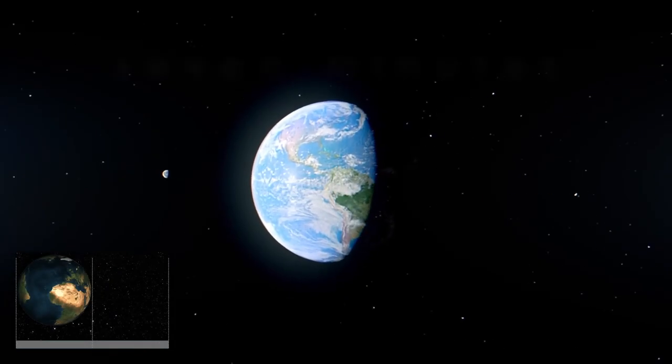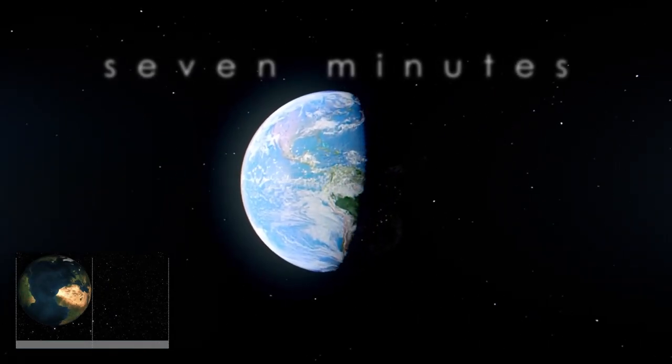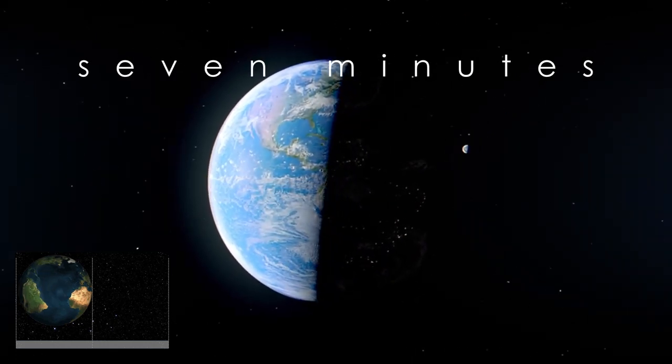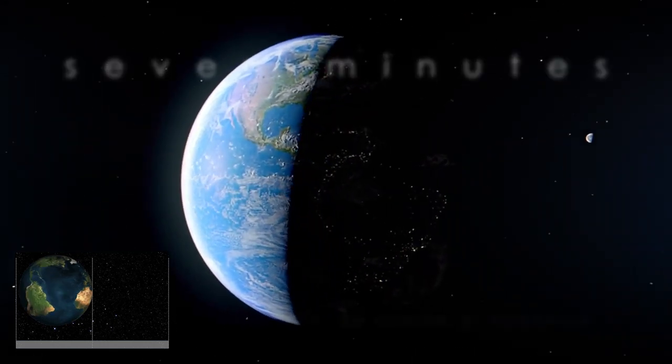Some people doubt that our earth is spinning and orbiting the sun. They claim that it's impossible for our planet to move at a speed of 30 kilometers or almost 20 miles per second.